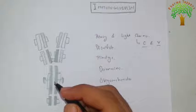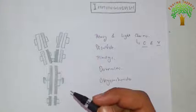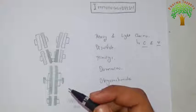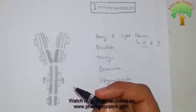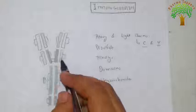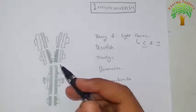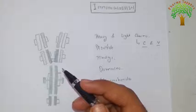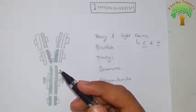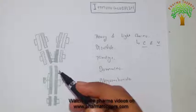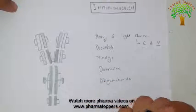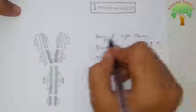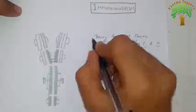Regarding the constant and variable regions: light chains have approximately 110 amino acids in their variable region and 110 amino acids in their constant region. In case of heavy chains, the variable region contains around 110 amino acids while the constant region contains around 320 to 440 amino acids.